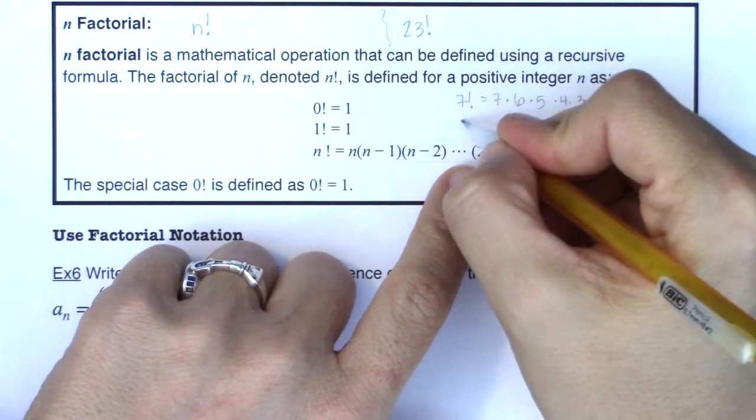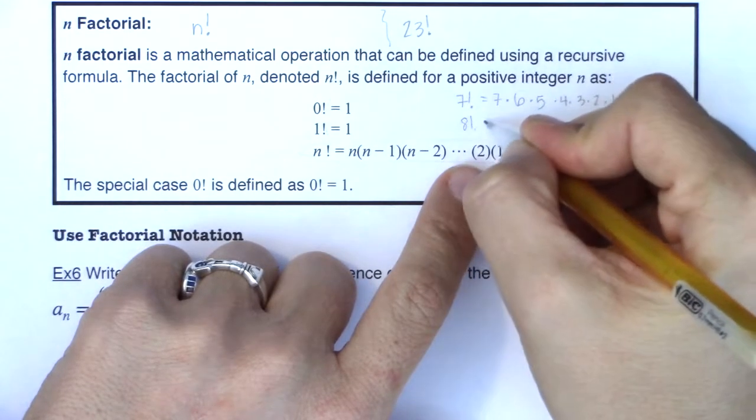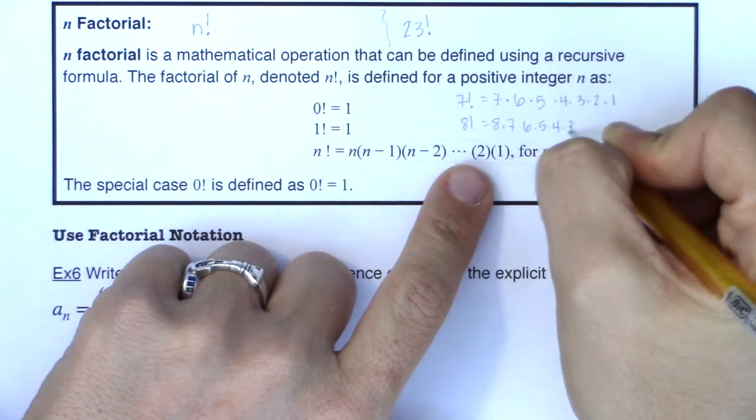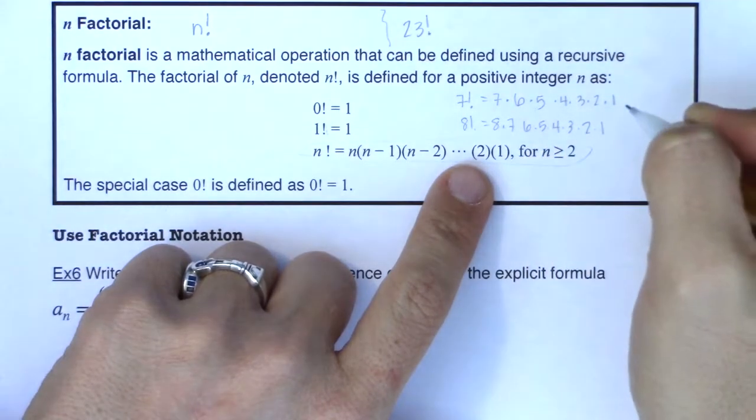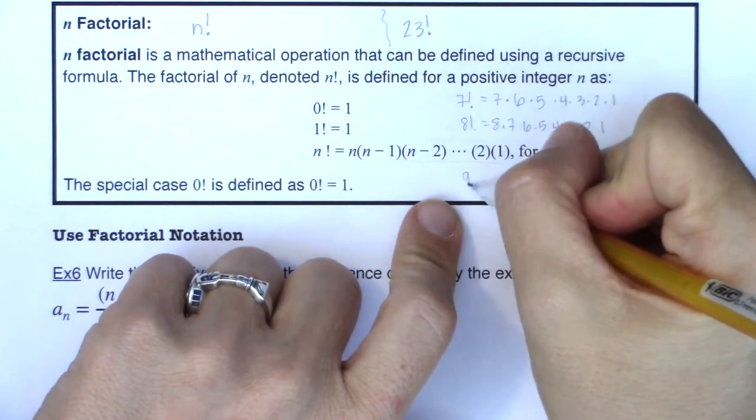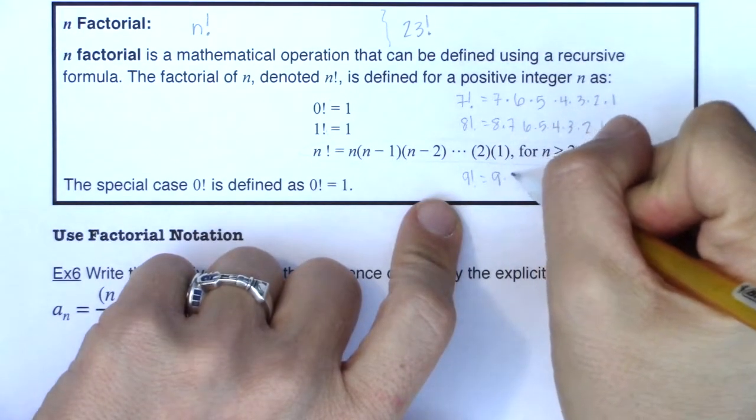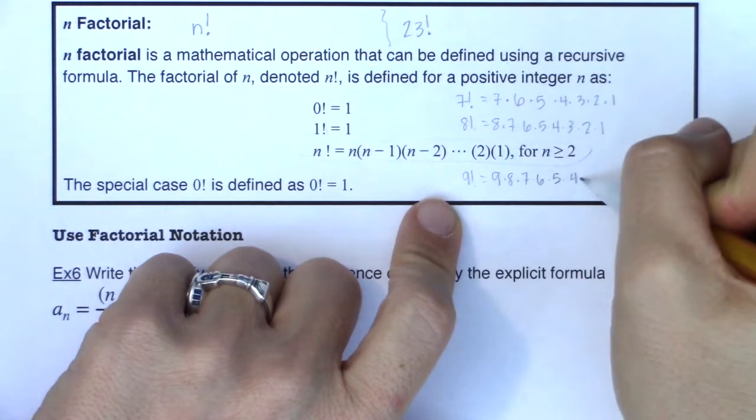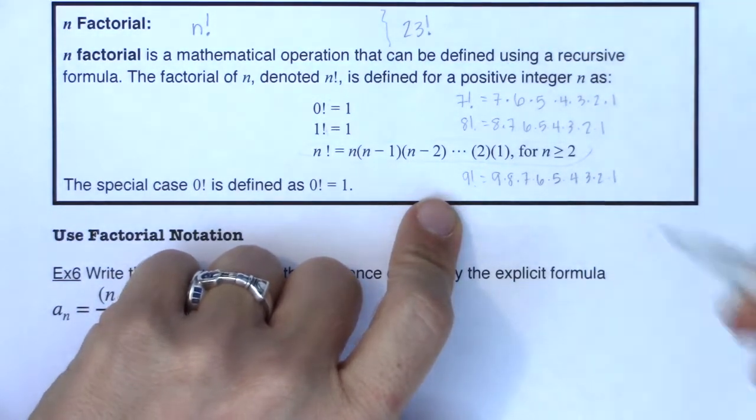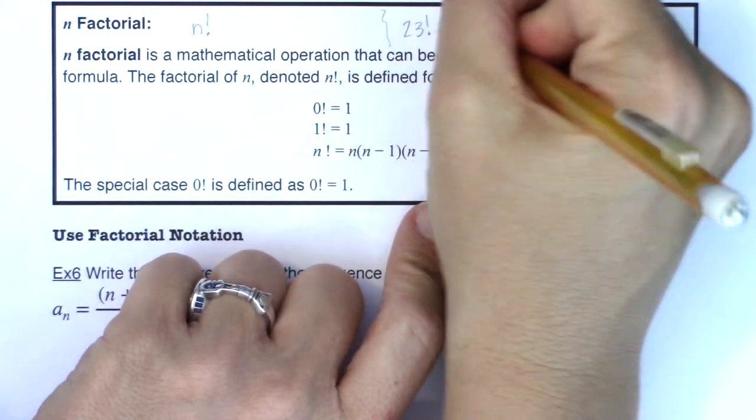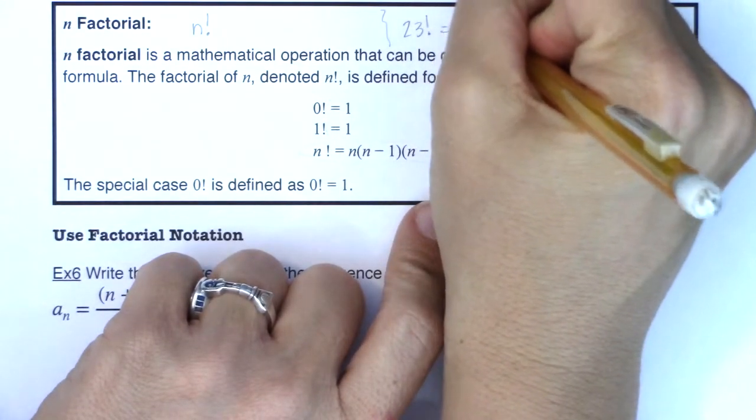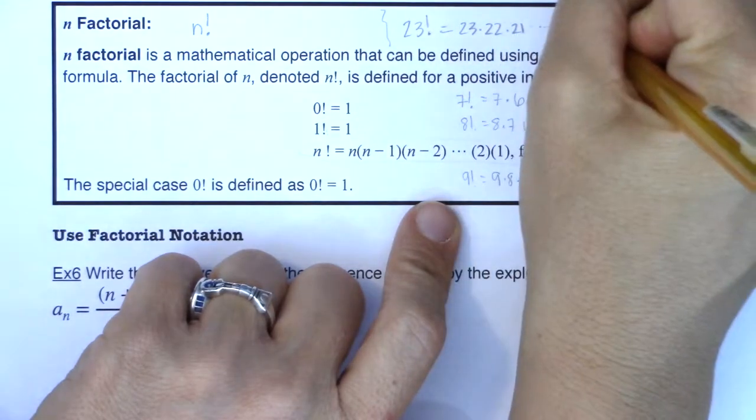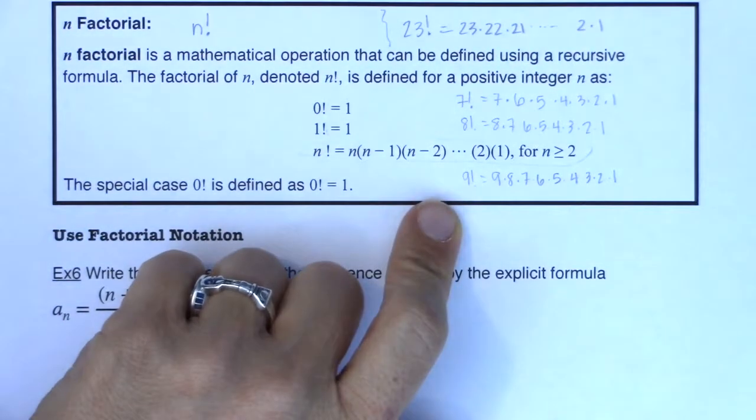So if I gave you something like seven factorial, if n was seven, this would be seven times six times five. And then I would go all the way down times four times three times two times one, whatever that product is, that is what we define as n factorial. If I gave you something like eight factorial, it would be eight times seven times six times five times four times three times two times one.